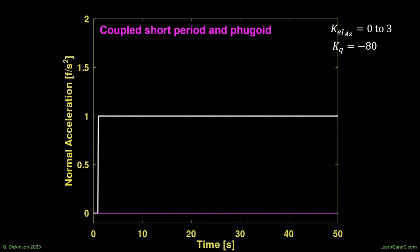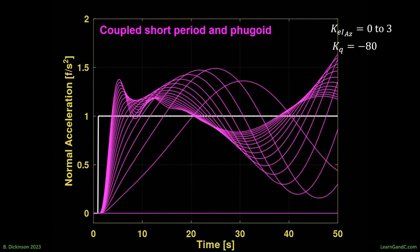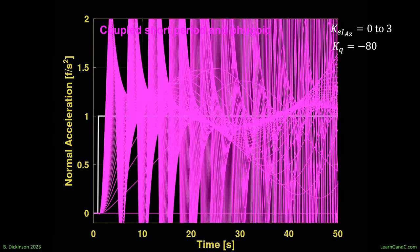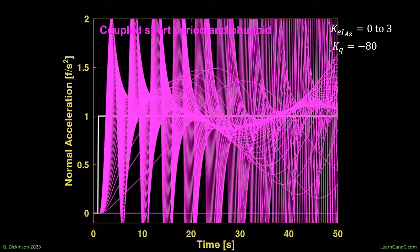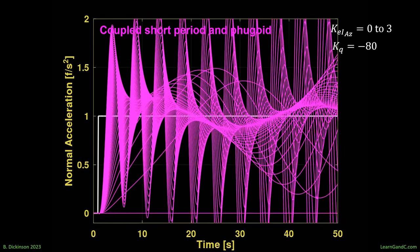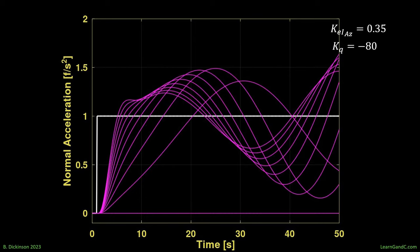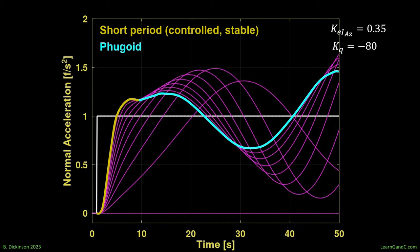So, now let's assess for the modally-coupled closed-loop system. For the selected gains, we see nice short period response initially, but then those dynamics decay, and what's left is the slower fugoid. Unstable. Long period.